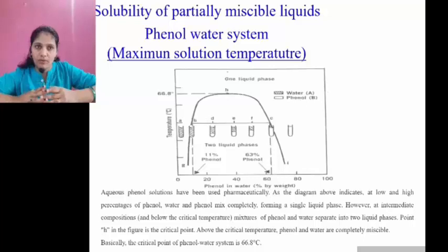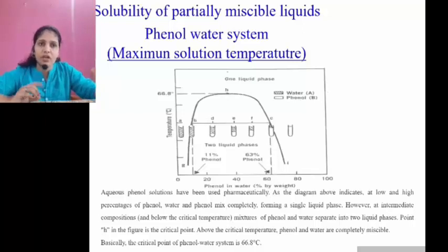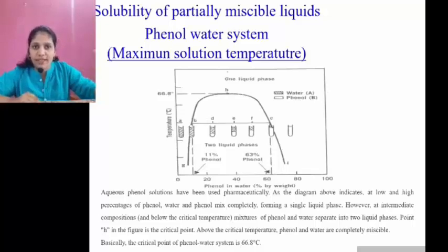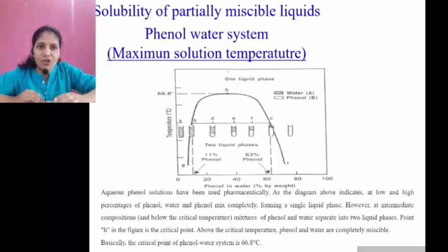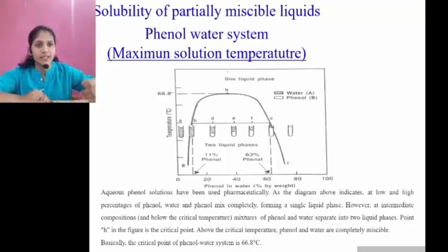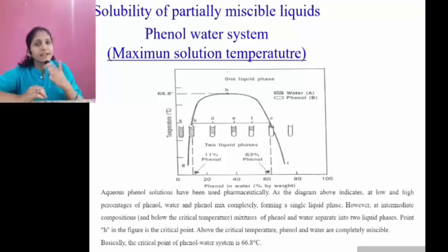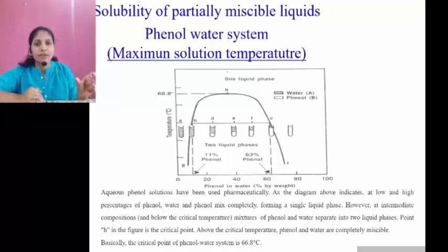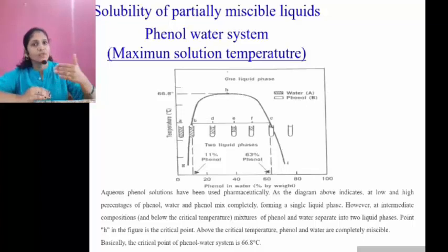The curve obtained, represented as g-h-i, contains 100 percent water at one end and 100 percent phenol after point c. So both individual components are shown: cuvet A is 100 percent water, cuvet B has phenol in less amount and water in large amount, representing low concentration of phenol. At low and high concentrations of phenol, the solutions will form a homogeneous layer.